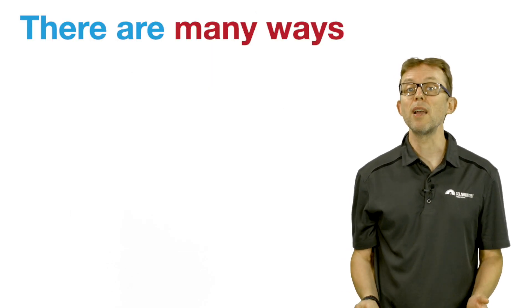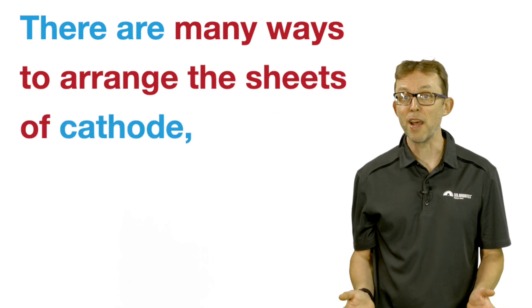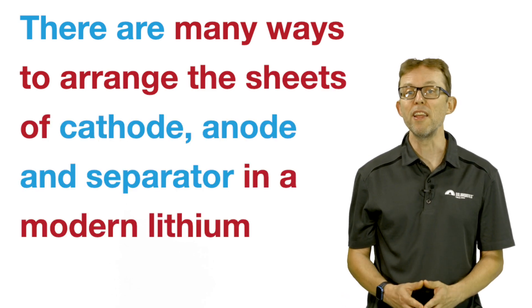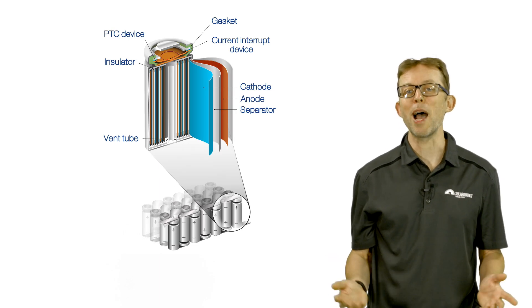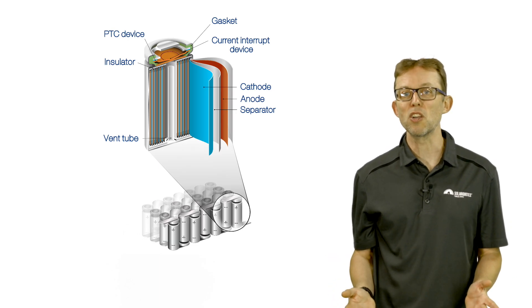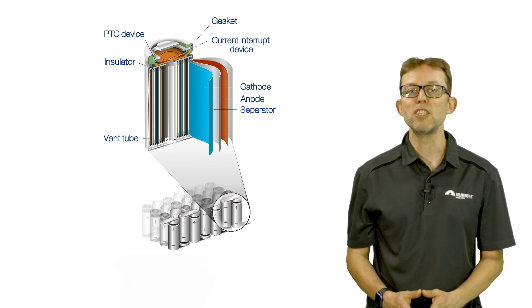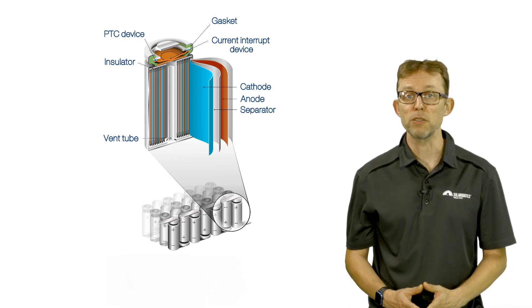There are many ways to arrange the sheets of cathode, anode and separator in a modern lithium-ion solar battery. They are usually constructed like a jam roll inside metal cylinders called cells. A home energy storage system can have thousands of these battery cells.